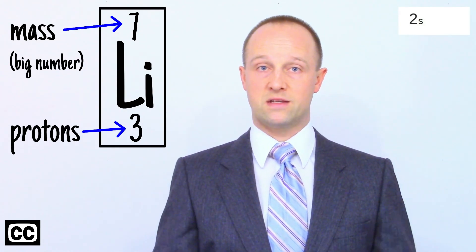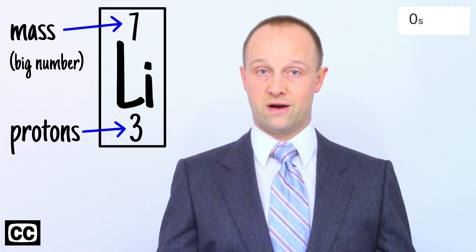If you subtract the proton number from the mass number, you can work out how many neutrons there are. For a more detailed explanation of the periodic table, please check this video and click here to subscribe.